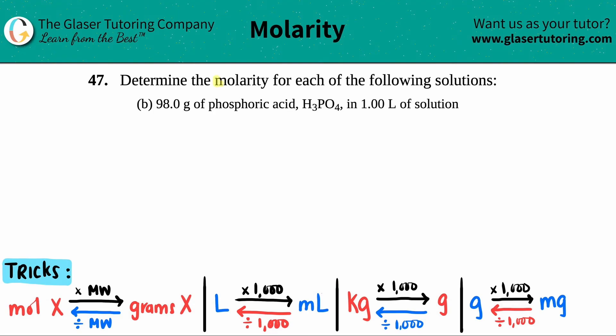Number 47: determine the molarity of the following solutions, letter B. In this case, we have to find the molarity when we're given 98.0 grams of phosphoric acid, H3PO4, in 1.00 liter of solution.